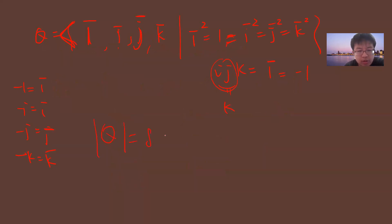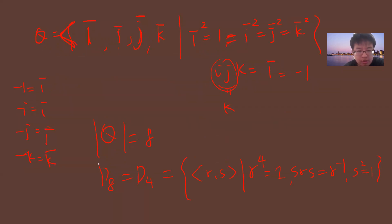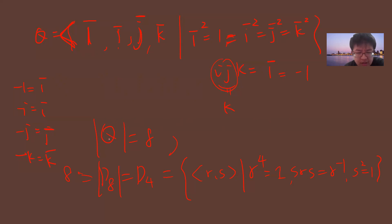Q has order 8. Recall from the previous video we also constructed D8, the dihedral group of order 8 — some people use D4 notation, which is confusing — generated by r, s such that r⁴ = 1, srs⁻¹ = r⁻¹, and s² = 1. It is not easy to see why Q and D8 are different groups.